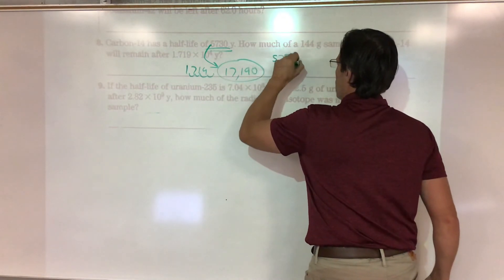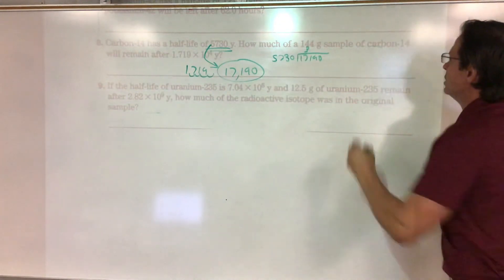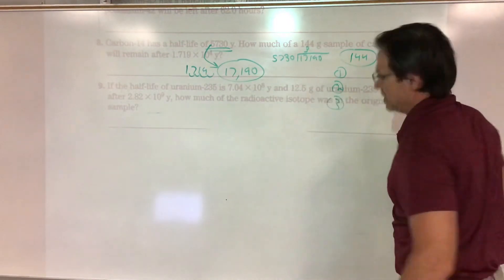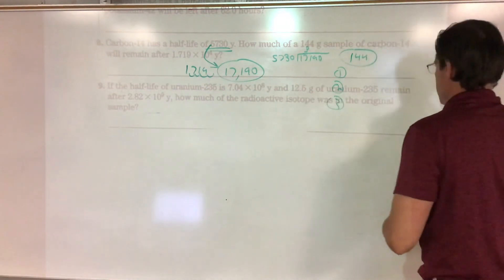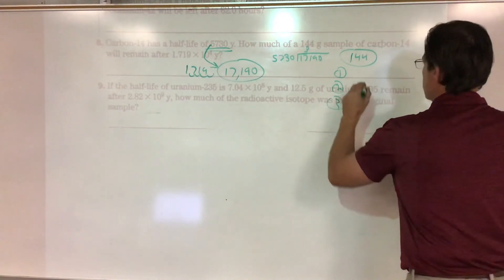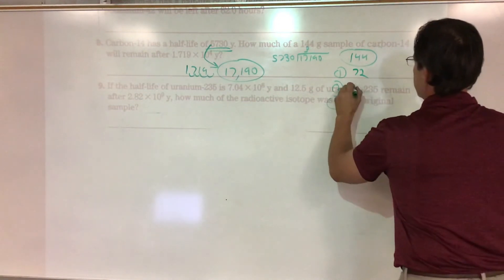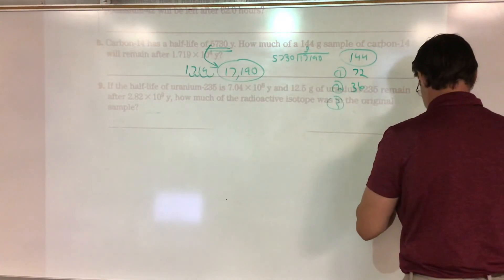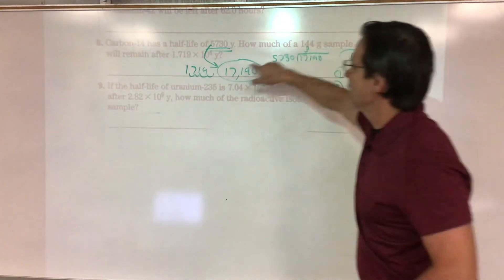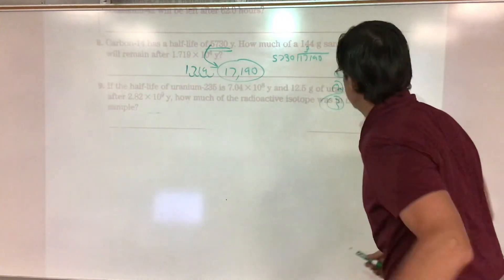Divide 5,730 into 17,190 and it comes out to an even 3. So take 144 grams through three half-lives: 144 → 72 → 36 → 18. The answer is 18 grams remaining after this time frame.